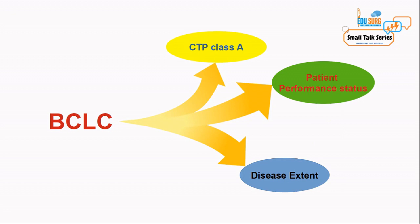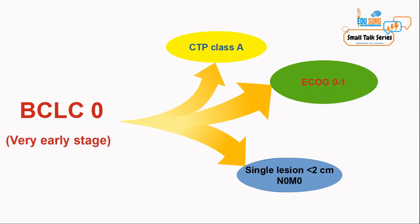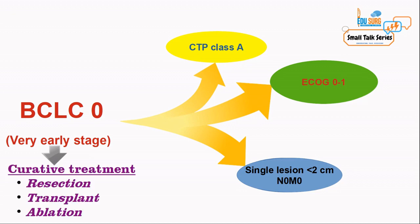When the liver function is Child-Pugh class A and the patient performance is ECOG 0 or 1, and the disease extent is a single tumor less than 2 centimeters, which is node negative and with no metastasis, then this is taken as BCLC 0 or very early stage disease. The options for this stage are curative — resection, transplant, and ablation.